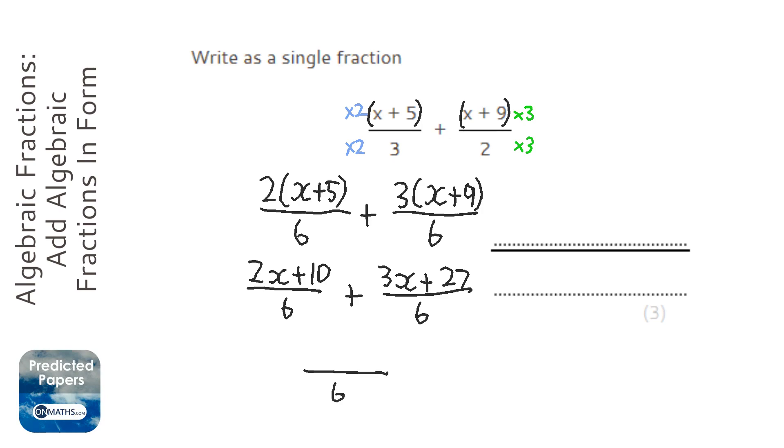So bottom is 6, so 2x plus 3x is 5x, and 10 plus 27 is 37. So my answer is 5x plus 37 over 6.